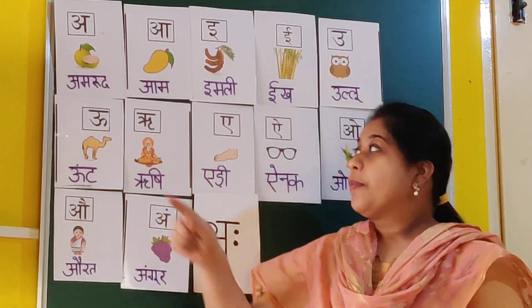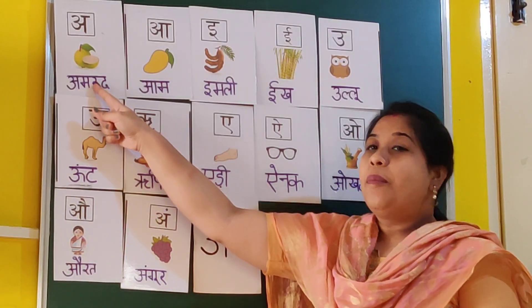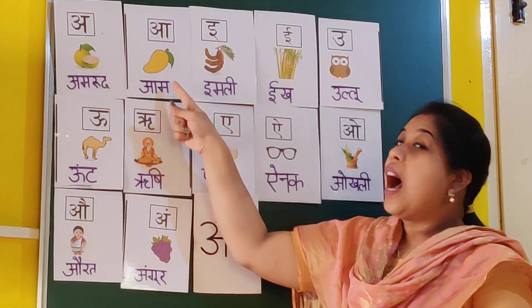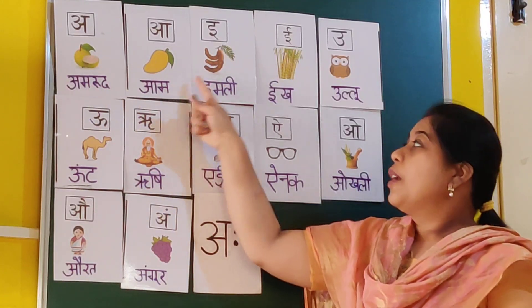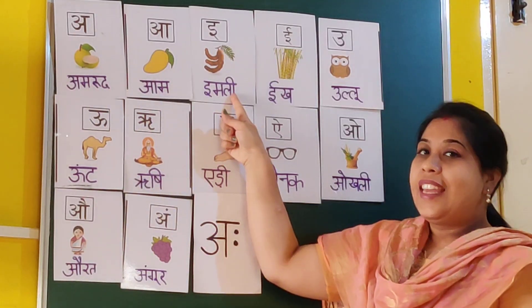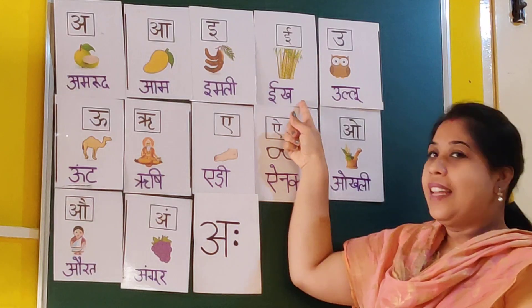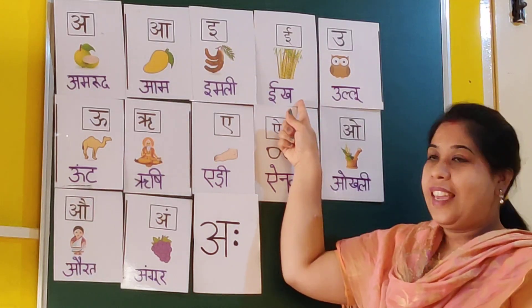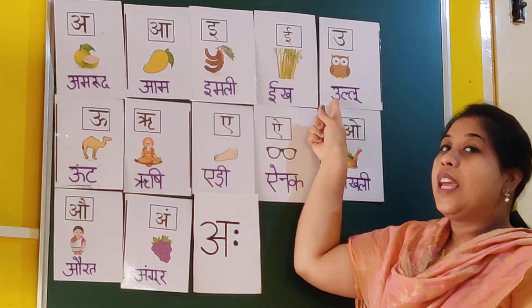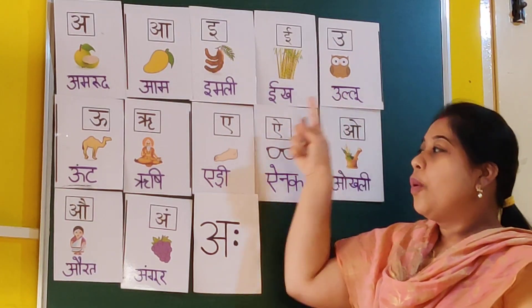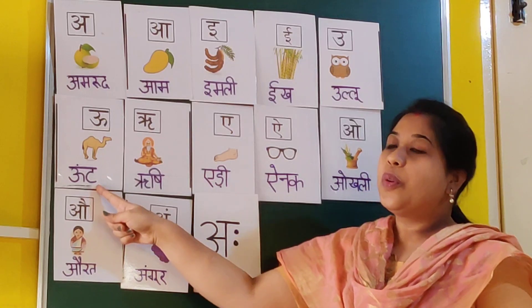So let's start. A se amrood, A se aam, chhoti i se imli, badi i se eent, chhota u se ullu, bada u se unt.